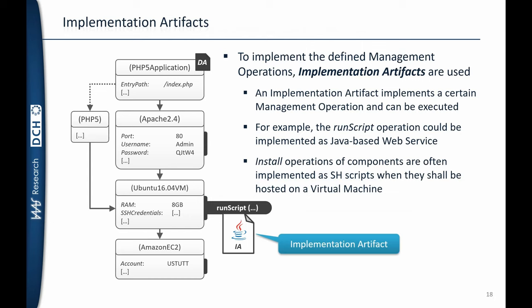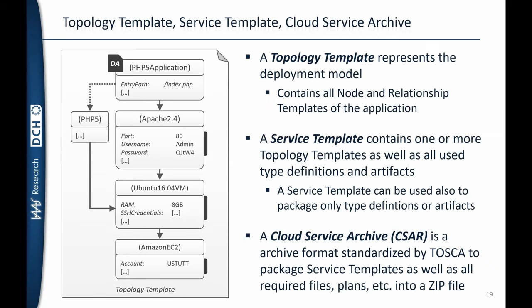Management operations can also be implemented using simple shell scripts or web services that communicate to other services — for example, to provision the Ubuntu VM on Amazon EC2. The whole application model in TOSCA is called a topology template. A topology template contains all node and relationship templates of the application, and it is wrapped inside a service template, which contains all the necessary information to deploy the application.